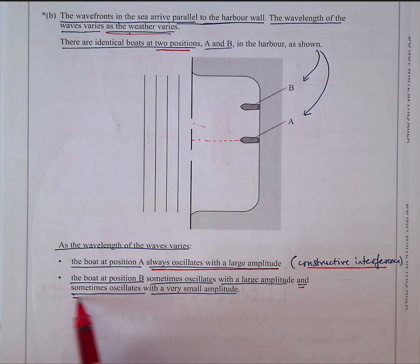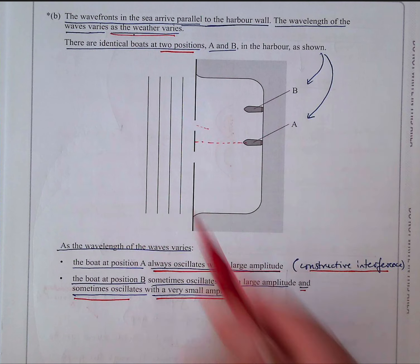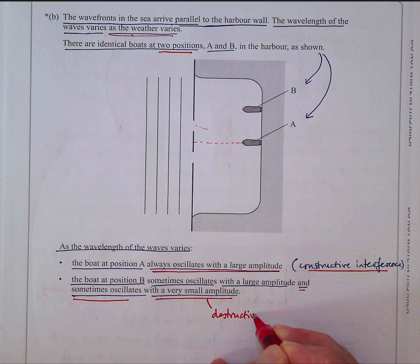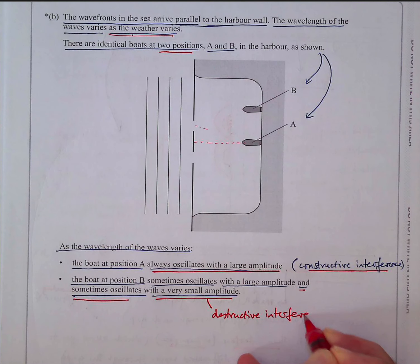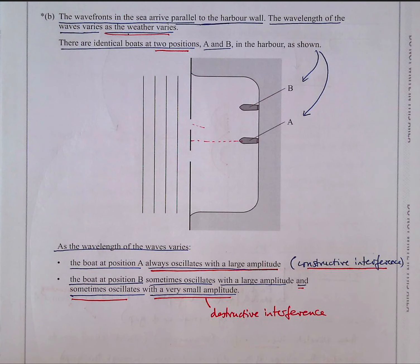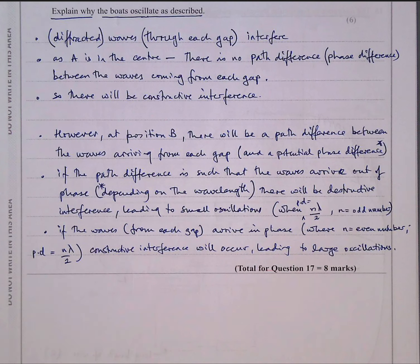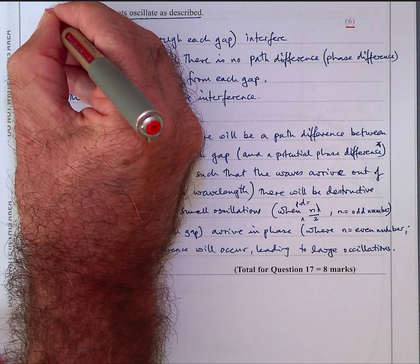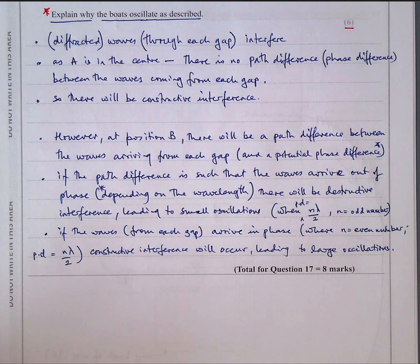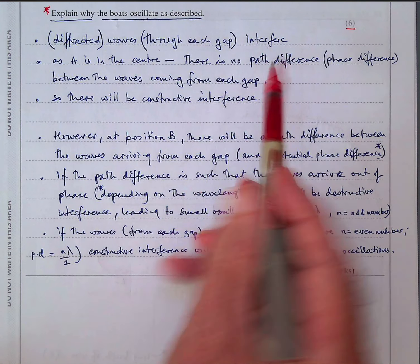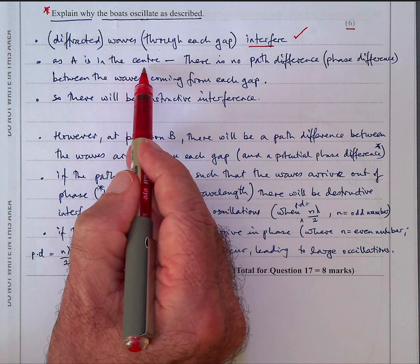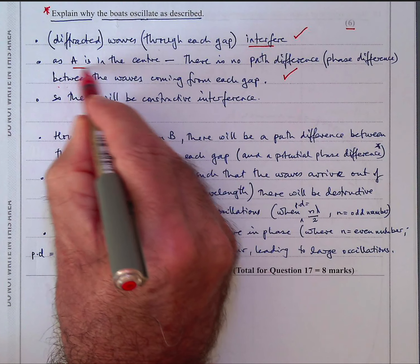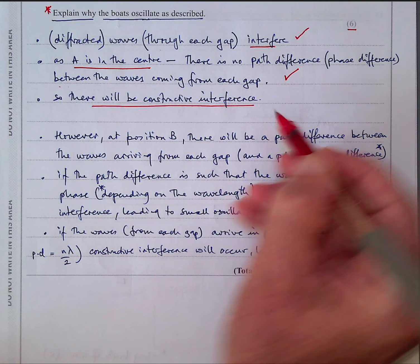They want you to explain why the boats oscillate as described — six marks, with an asterisk for quality of written communication. The diffracted waves through each gap interfere — one mark. As A is in the centre, there is no path difference or phase difference between waves from each gap, so there will always be constructive interference. The peaks and troughs will always arrive together — that's A.